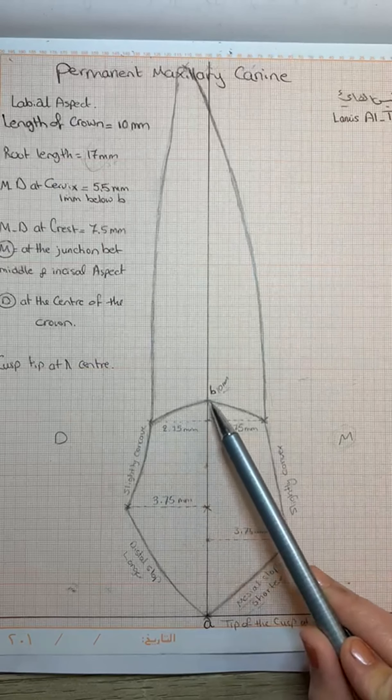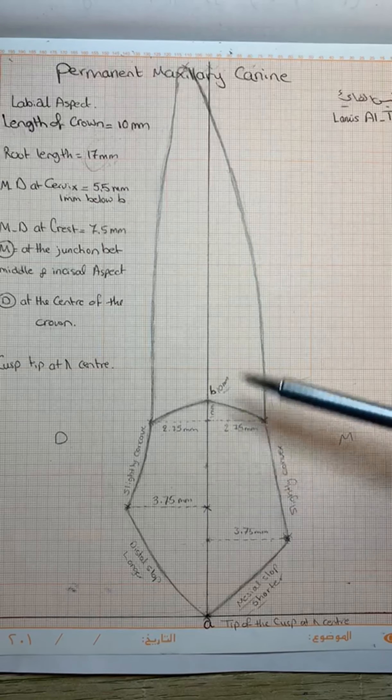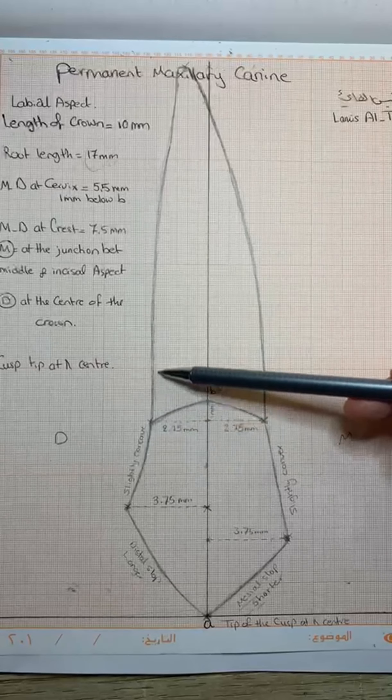Cervical line is a convex line with convexity toward the root. For the root, it will be a conical shape with slight distal angulation.